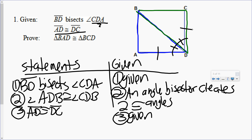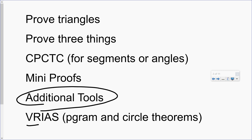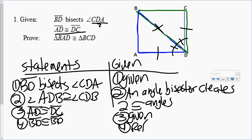I don't have any more givens. So once I run out of givens, I move on to my additional tools. All we talked about so far is V and R — vertical angles or reflexive property. Which one do I see here? Well, I see BD is in both triangles. That's reflexive property. So I'm going to write BD is congruent to BD. Reflexive property.